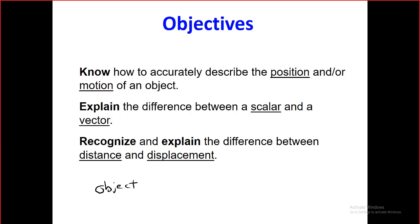If we have something that moves and we need to describe its motion, we have to have something to help us describe it. For example: the reference point, the distance it will travel, the direction of the motion, and the speed. We need all of these things to be able to describe it properly.